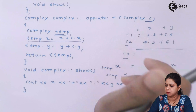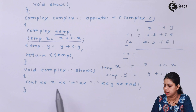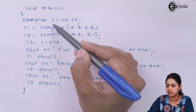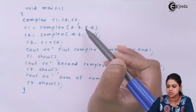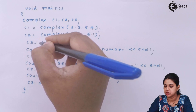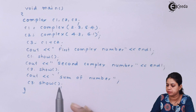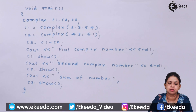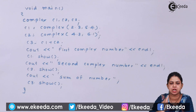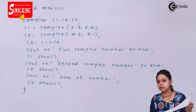I then display the addition using the show() function, which outputs x and y. In the main function I created three objects: c1 initialized as (2.3, 6.4), c2 as (4.3, 6.1), and c3 = c1 + c2. Then I display c1, c2, and the addition c3. The rule for overloading binary operators is: one object can be used as it is, but for the remaining objects we create their corresponding objects.